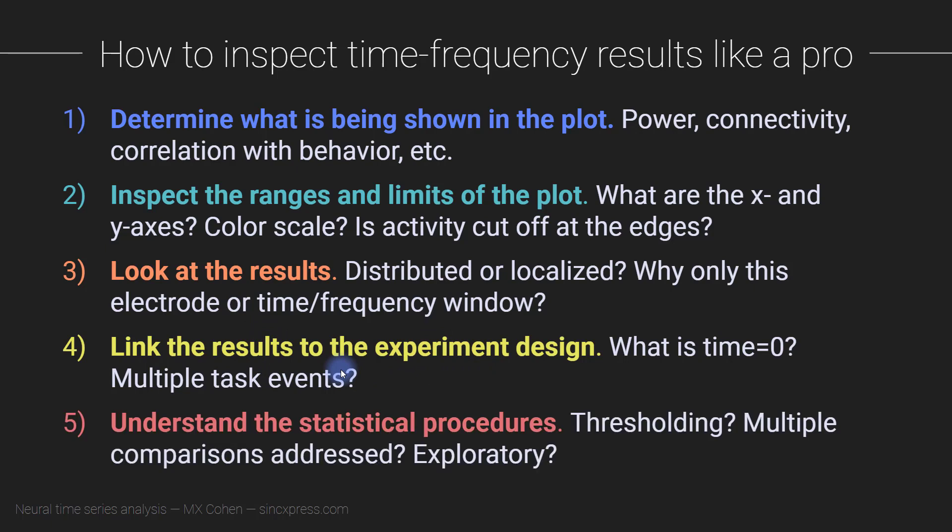So this is like the onset of a visual stimulus, or maybe it's when the subject pressed a button or typed something on the keyboard. So you just want to look for these experiment events and relate them to the data. And then the final step is to understand the statistical, so the inferential statistical procedures that are shown in the plot. Is there any thresholding? Are there multiple comparisons, corrections that are applied? Or are the data or the analyses hypothesis-driven or more exploratory?